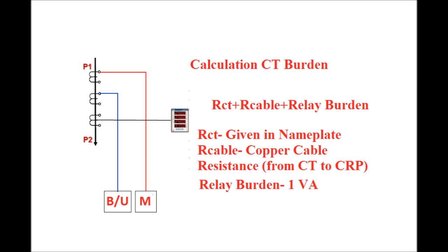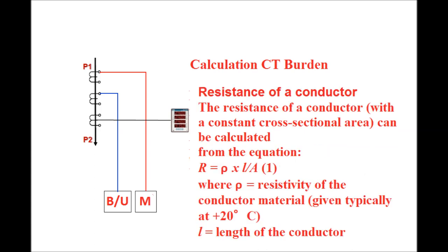In the CT secondary side, we have the CT secondary coil resistance, the cable connected from the CT secondary side to the CRP panel, and the relay burden. RCT is the CT secondary resistance given on the nameplate. R_cable is the resistance of the copper cable connected in the secondary side of the CT to the control panel. The relay burden is normally a maximum of 1 VA. This is the CT secondary burden.